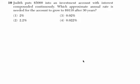Okay, so what do we know here? We know that Judith puts $5,000 into an investment account with interest compounded continuously. Okay, so we're compounding continuously.